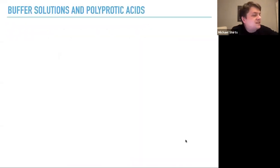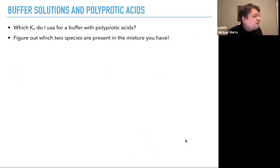So buffer solutions and polyprotic acids. It's a little complicated when you look at polyprotic acids, because you can actually make several different kinds of buffers. So what Ka do I use for a buffer with polyprotic acids? You know, there's a bunch of KAs. And so what you want to figure out is which two species are present in the mixture that you have. Because the KAs are usually widely separated, you'll usually only have two of the species. The third species, there won't be very much of it.